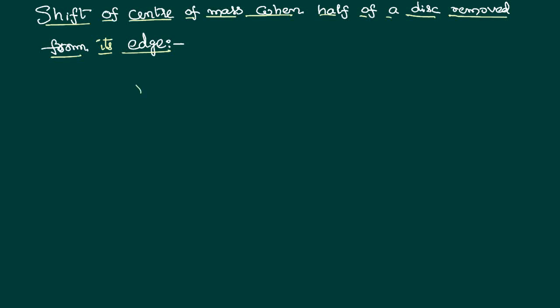Let us consider a disc. We know that the disc is a two-dimensional body. Being a uniform body, its center of mass is at the center itself. Let the radius of this disc be equal to R.